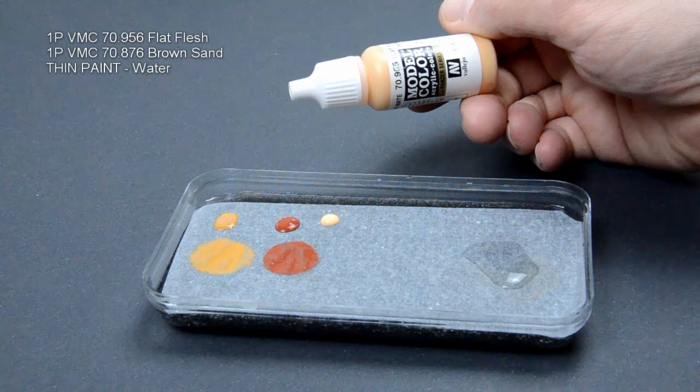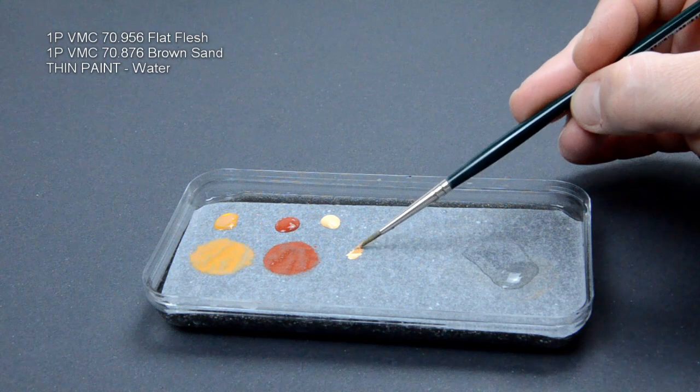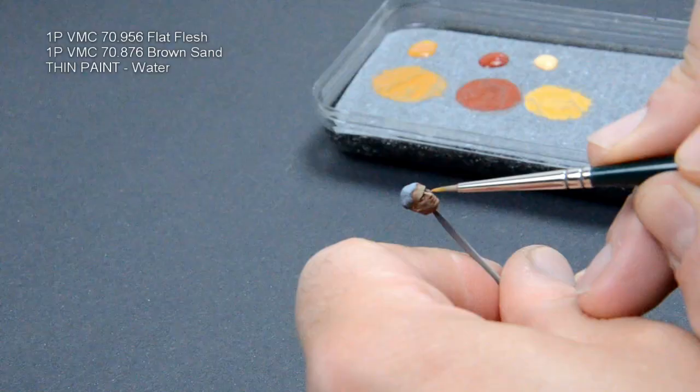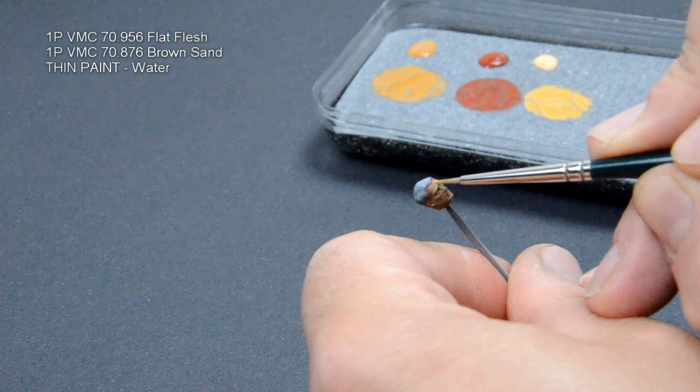Flat flash was added to the palette and I made a 1 to 1 mix with brown sand. Those highlights should be stronger than a glaze, so a little less water is needed. But still, keep them thin. We should cover all the parts where there are no shadows and do it in multiple thin coats.